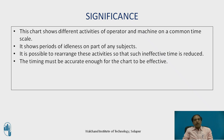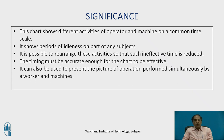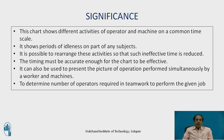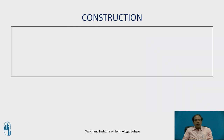The timing must be accurate for the chart to be effective. The chart can also be used to picture operations performed simultaneously by workers and machines. In cases where a layout is new or a new machine is installed, drawing a multiple activity chart helps determine the number of operators required for a particular job.